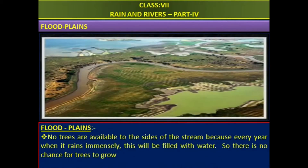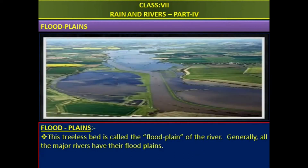No trees are available to the sides of the stream, because every year when it rains immensely, this area will be filled with water, so there is no chance for trees to grow. This tree-less bed is called the floodplain of the river. Generally, all the major rivers have their floodplains.